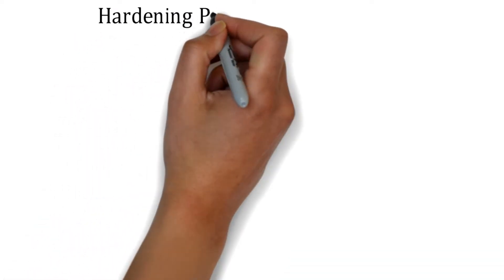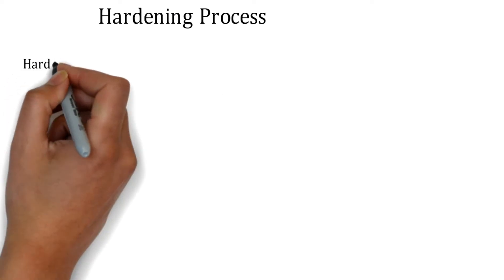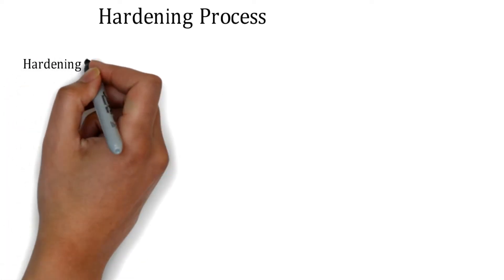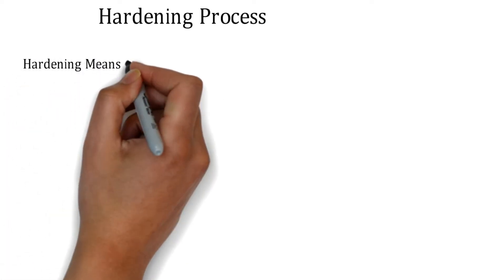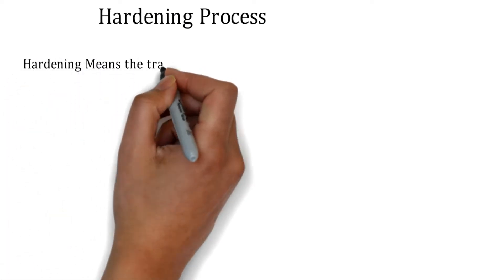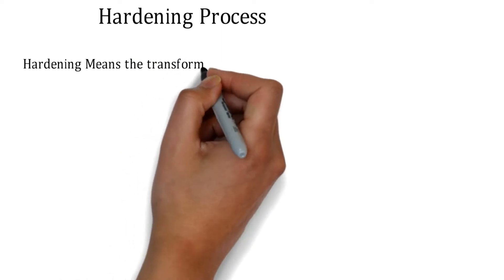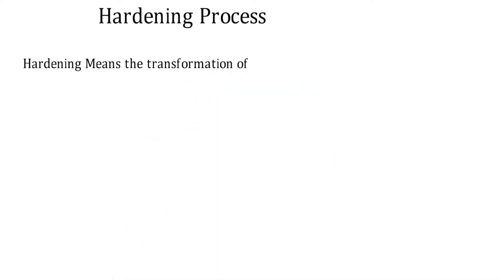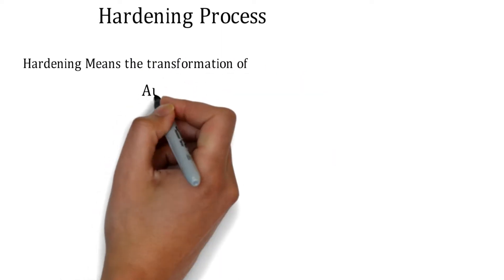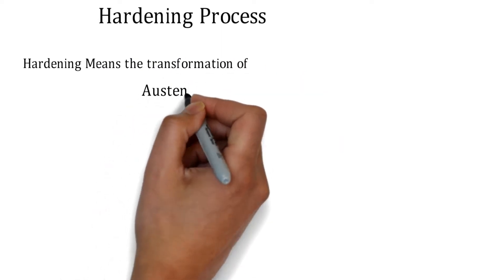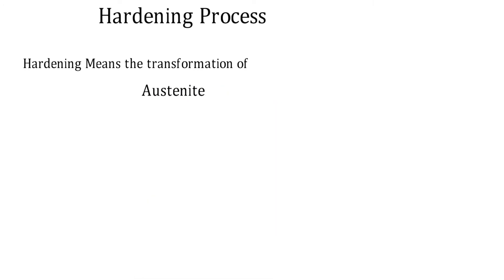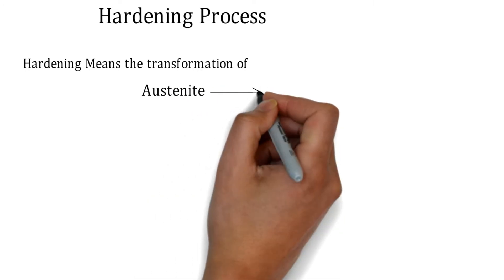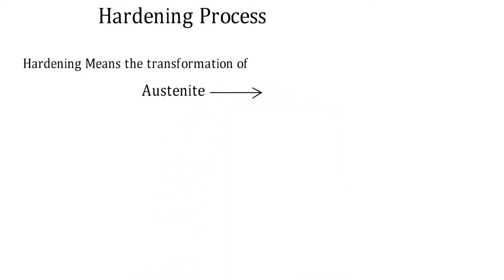Welcome back to AMMI. In this video we are going to learn about the hardening process. Hardening means the transformation of austenitic structure into the martensitic structure — the austenite gets converted into martensite.